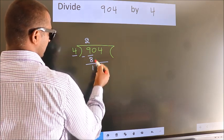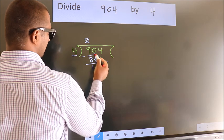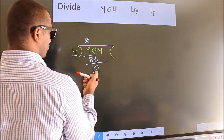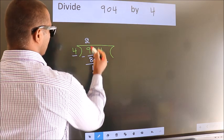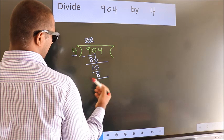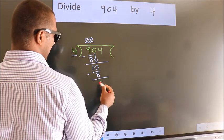After this, bring down the beside number. So, 0 down. So, 10. A number close to 10 in the 4 table is 4 times 2, which is 8. Now we subtract. We get 2.